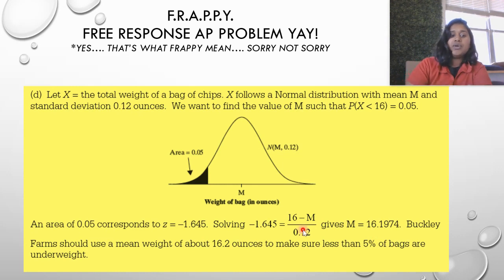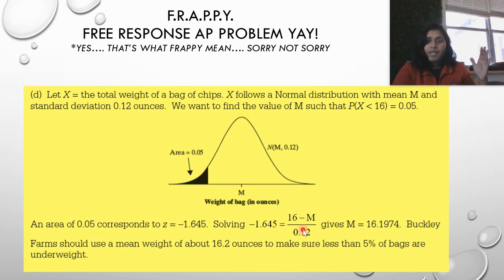We divide by the error. If we solve this out, we get a mean average of 16.1974, not too much higher than the previous but a little bit higher. If Buckley wants to make sure that we have less than 5% below 16 ounces, then we have to use an original mean weight of about 16.2 ounces to make sure that only 5% of our bags are underweight.